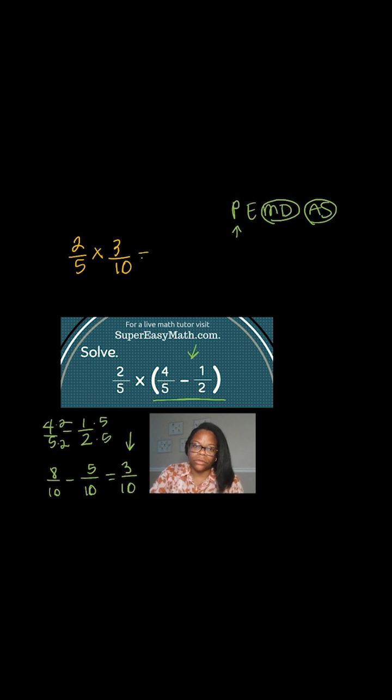When I'm multiplying fractions, I can multiply straight across, and I don't need to have a common denominator. You only need a common denominator when you're dealing with fractions when you're going to add or subtract them. So when I go from left to right, 2 times 3 is 6, and 5 times 10 is 50.